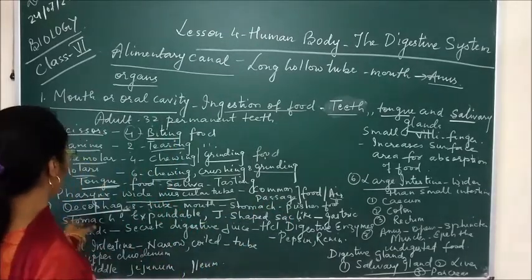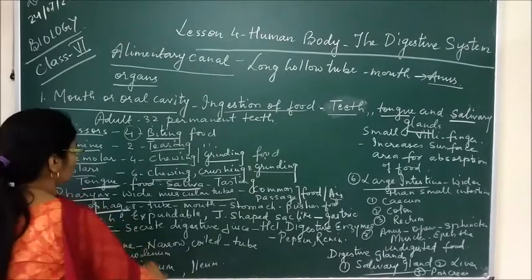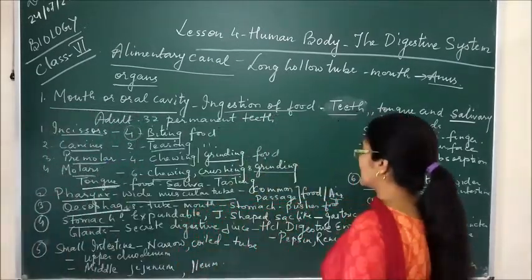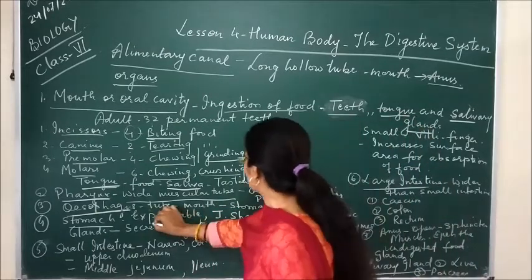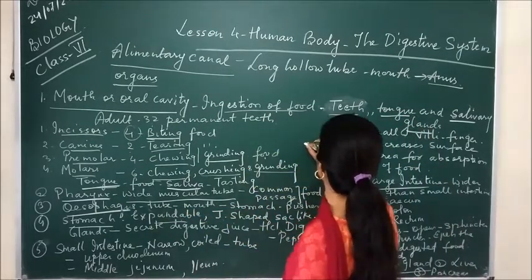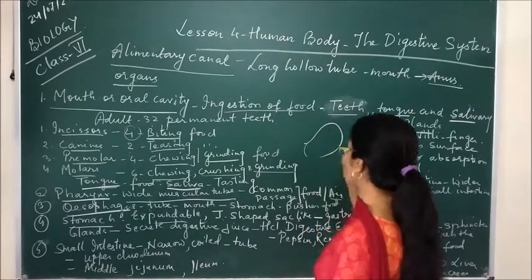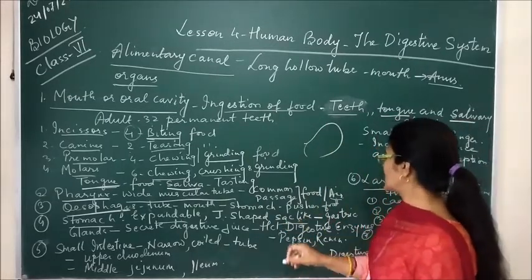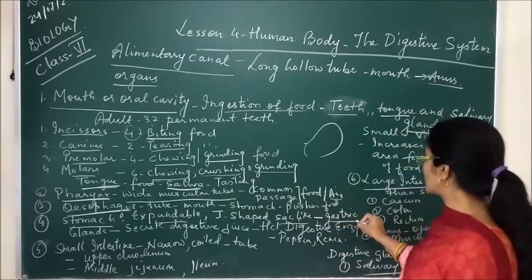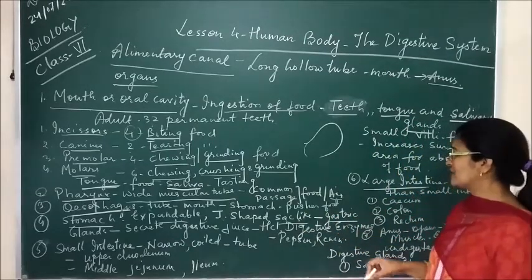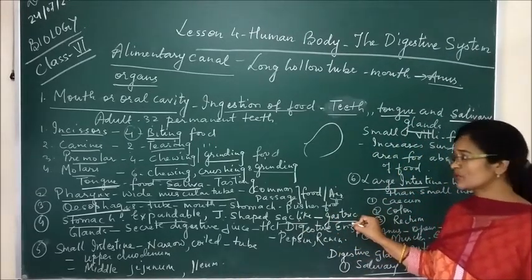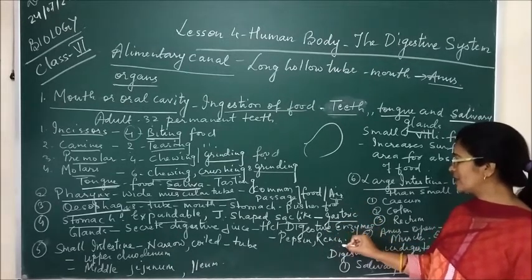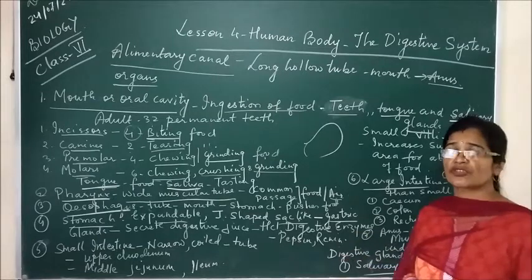After the esophagus comes the stomach, the main organ where digestion of food takes place. The stomach is expandable and J-shaped, like a bag-like structure. It contains gastric juices and also digestive enzymes like pepsin and renin, which help in the digestion of food.